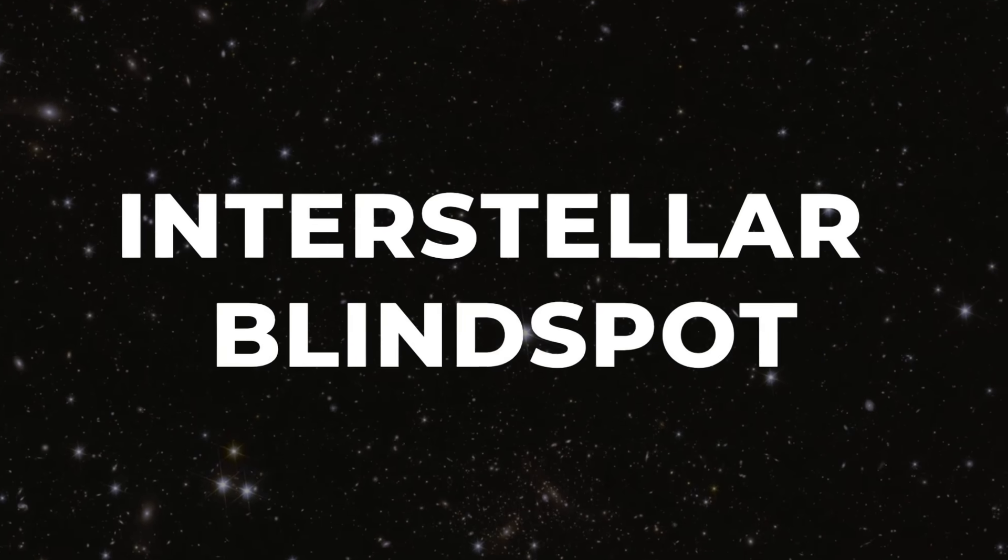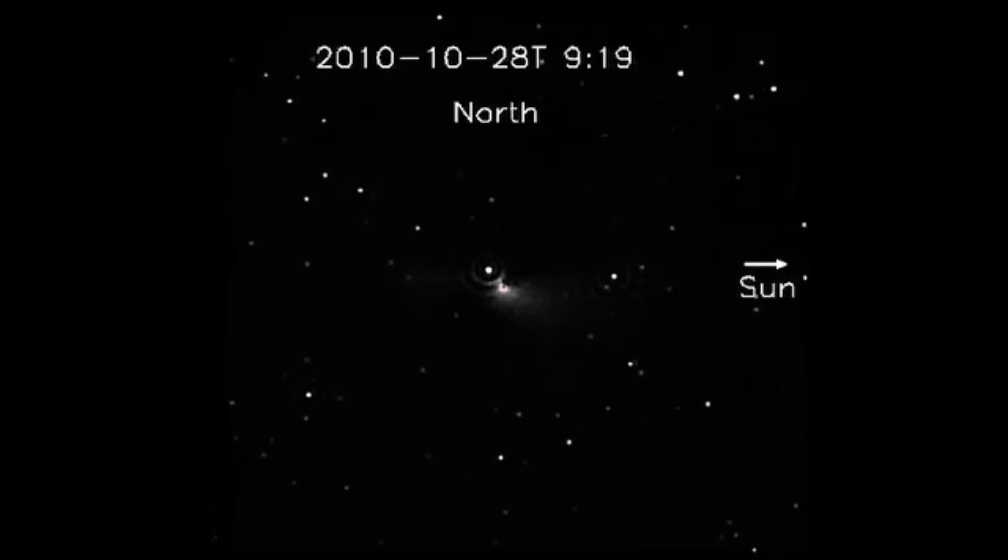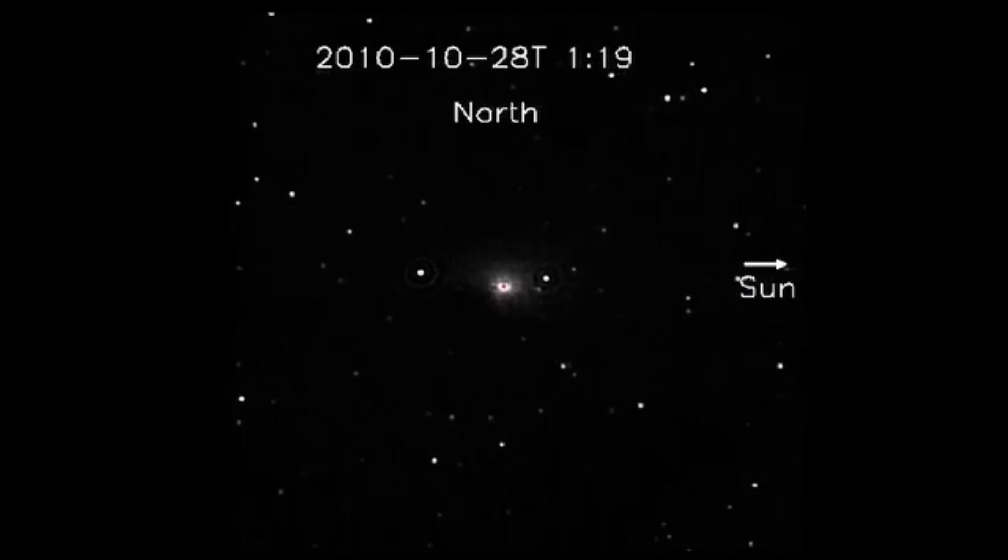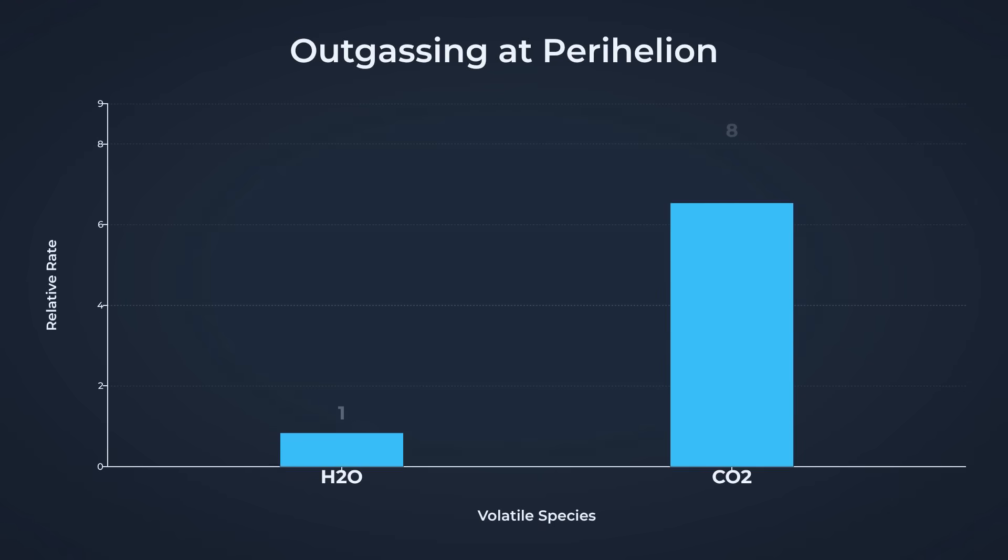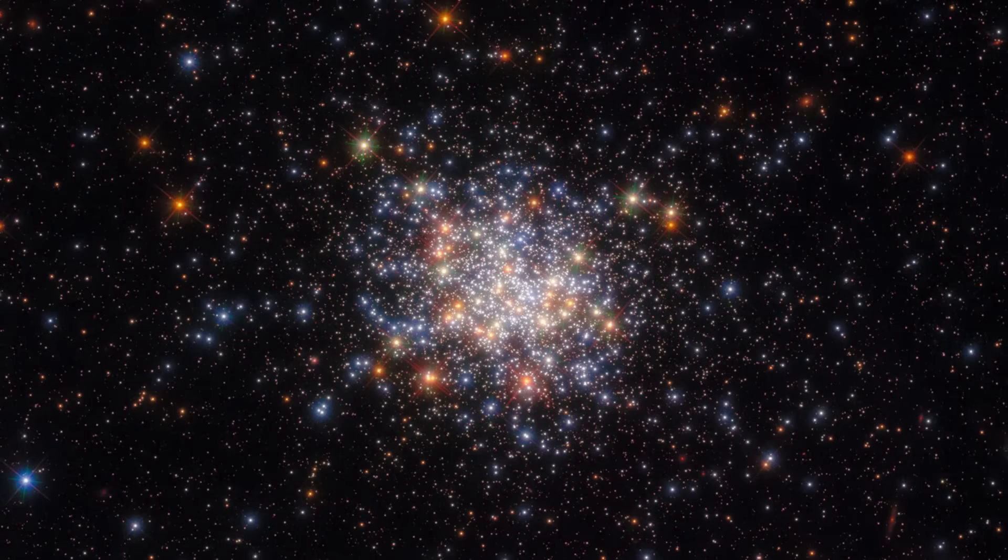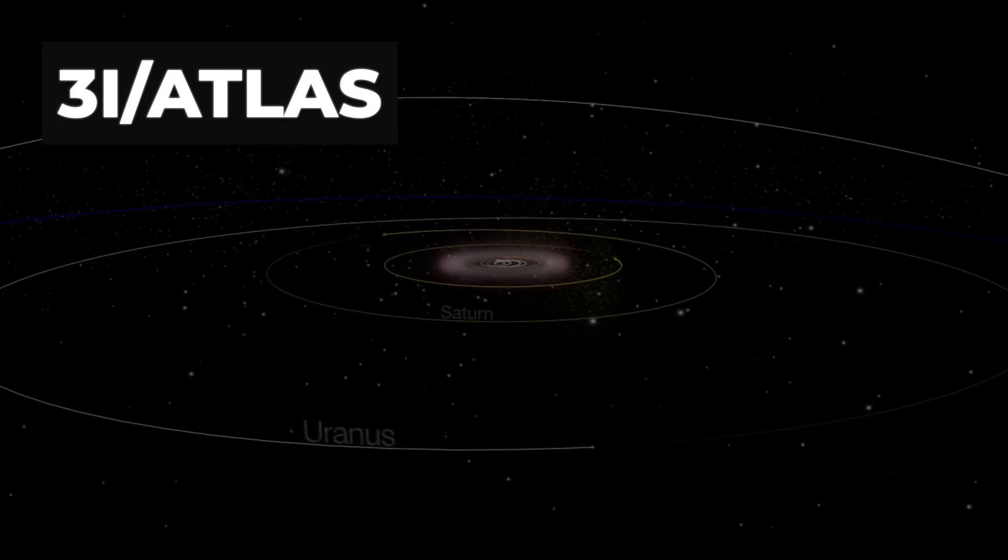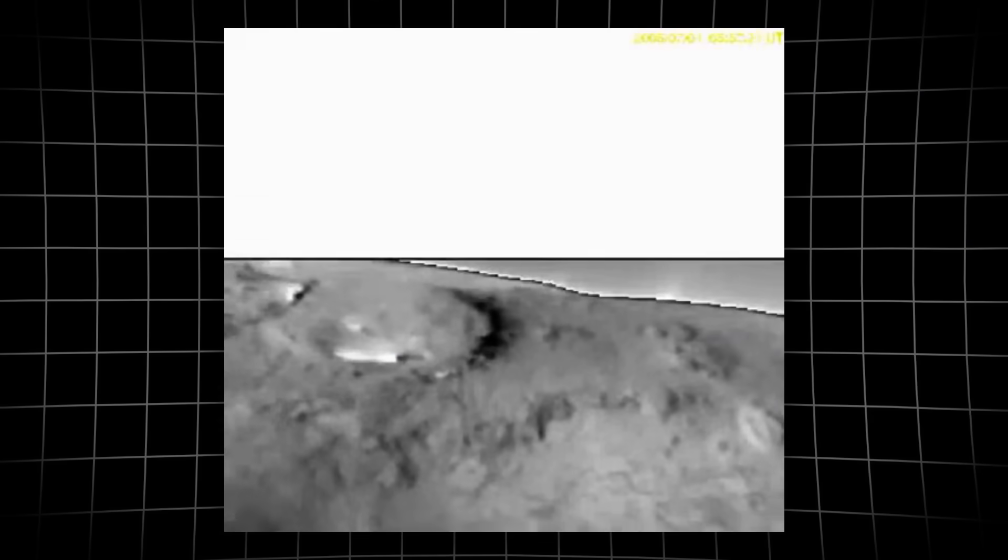3I-Atlas is not just another icy wanderer. It's the third interstellar object ever confirmed, and its chemistry reads like a challenge to everything we thought we knew about comets. Most comets in our solar system are dominated by water vapor, but 3I-Atlas is different. Its coma is fueled by carbon dioxide, outgassing at rates nearly 8 times higher than water. That's a signature more typical of the frozen outskirts beyond Neptune than anything born in our own backyard. Spectroscopy from ground and space telescopes paints a picture of a nucleus smaller than a kilometer, yet active enough to shed material at a rate of up to 4 kilograms per second.